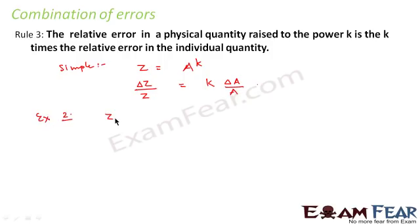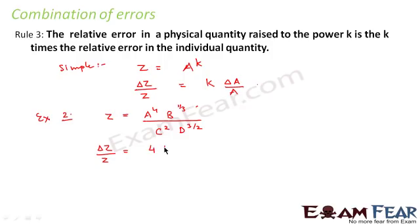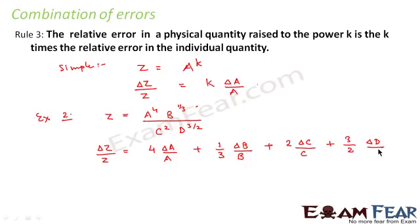Let us take example number 2. Say z equals a to the power 4, times b to the power 1/3, divided by c squared times d to the power 3/2. In this case, the relative error in z will be equal to 4 times the relative error in a, plus 1/3 times the relative error in b, plus 2 times the relative error in c, plus 3/2 times the relative error in d.